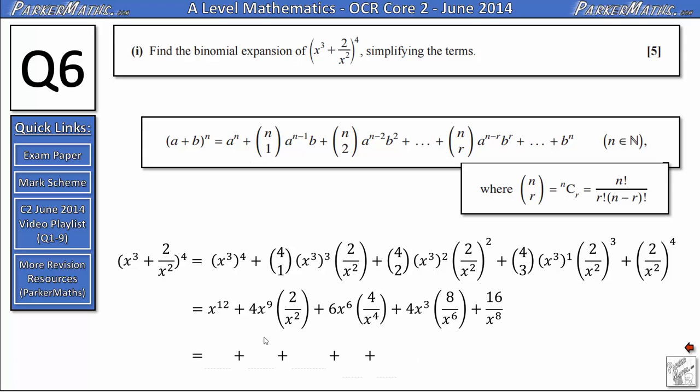Finally we just need to tidy up a little bit more. We'll leave the x to the power of 12 as it is. Here we've got 4 multiplied by 2, and an x to the 9 divided by an x squared. Well 4 times 2 is 8. And x to the power of 9 divided by x to the power of 2 becomes x to the power of 7. Here we've got 6 multiplied by 4 gives us 24. x to the 6 divided by x to the 4 gives us x squared.